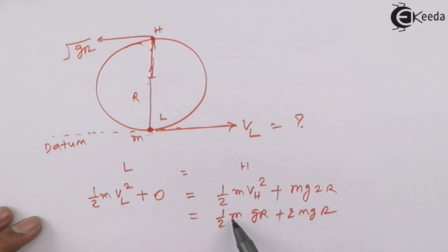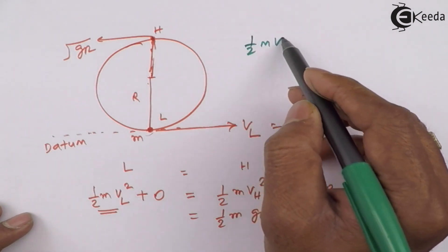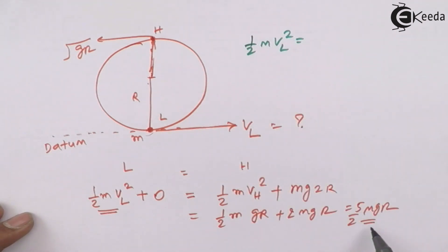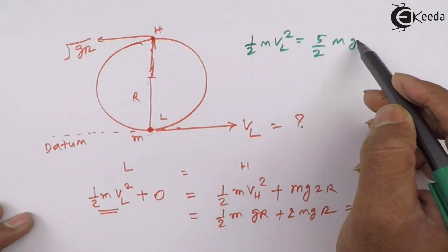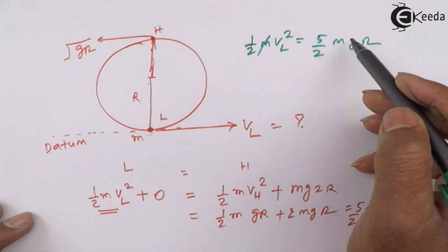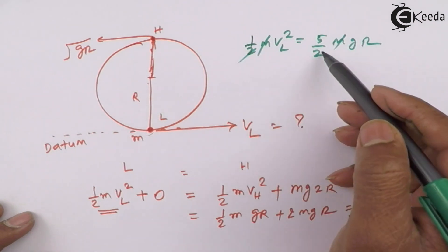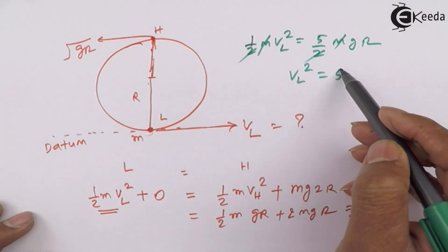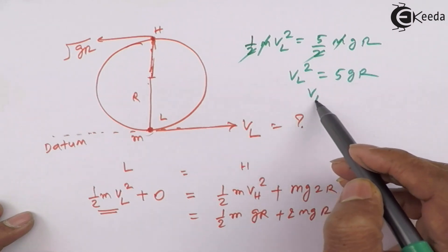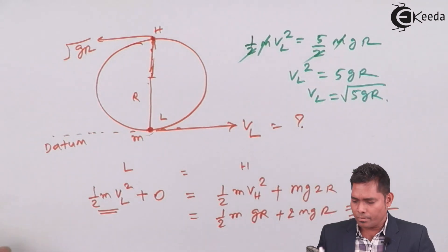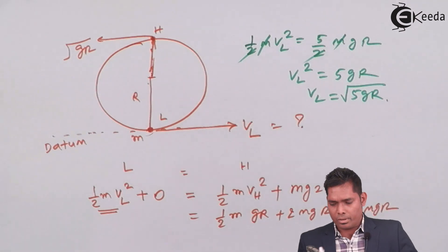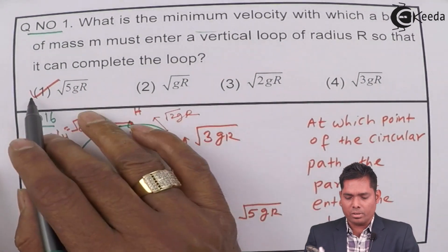And I know that this is (1/2)M*VH². But because we know that the highest point is √(GR). So, VH² is only GR plus 2MGR because this is 2MGR. So, this is MGR. This is 2MGR. Half MGR. 2 plus half is 5 by 2. This is (5/2)MGR. So, I can equate this with this one. What I am getting is (1/2)M*VL² = (5/2)MGR. This M, this M will cancel. This 2, this 2 will cancel. So, I am getting VL² = 5GR or VL is √(5GR). So, that is why this is the right answer to this question.